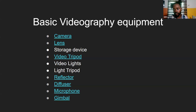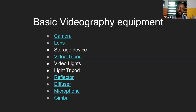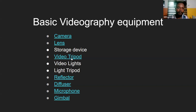You also need storage devices. With phones, the device's internal memory or memory card handles that. For cameras, you need a storage card or an SSD connected directly to the camera. For film cameras, footage is recorded directly onto the film, which is then processed. Those are the three major ways to store your footage.